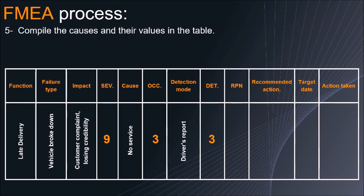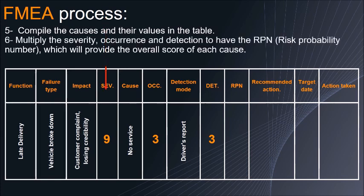Compile the causes and their values in the table. Multiply the severity, occurrence, and detection to get the RPN — Risk Priority Number — which will provide the overall score of each cause.